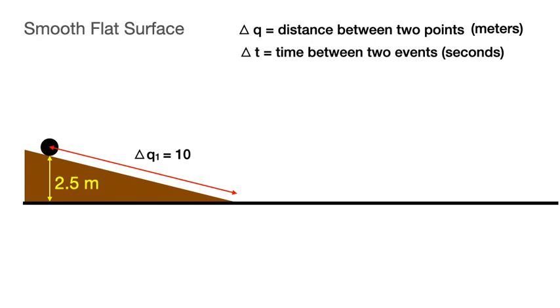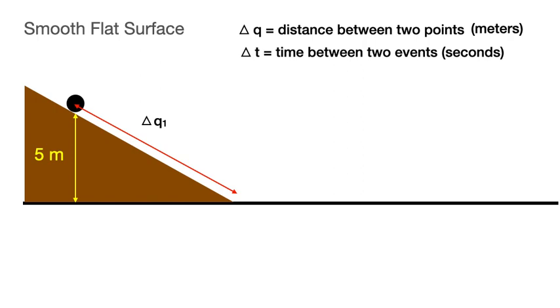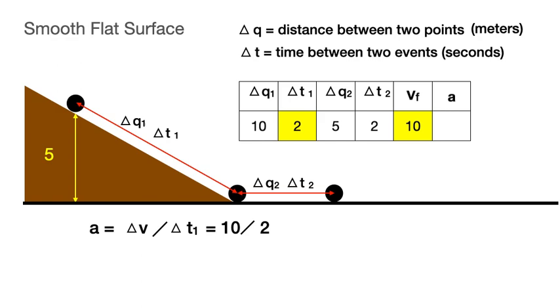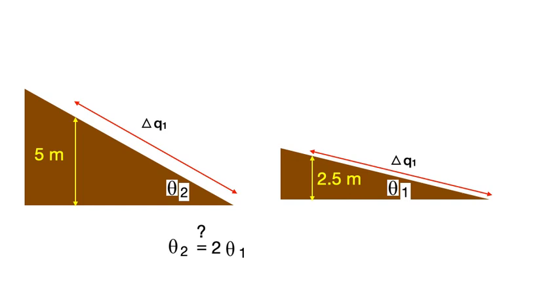What if we ran the experiment with delta q sub 1 equal to 10 meters again, but we increase the initial height of the ball from 2.5 meters to twice that number, or 5 meters. Let's do it. We find that the acceleration is 10 divided by 2, or 5 meters per second per second. The acceleration has also doubled.